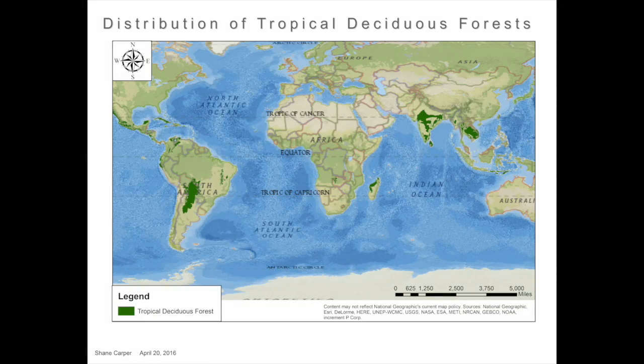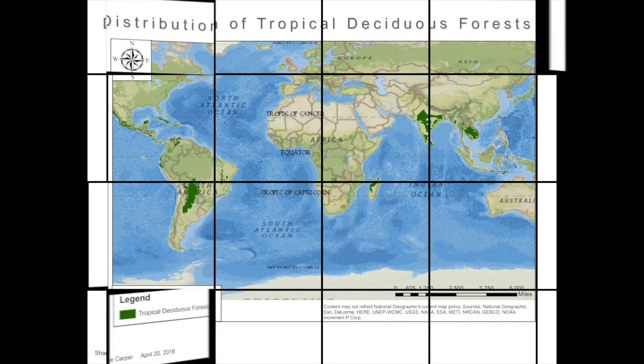Tropical deciduous forests, also known as monsoonal forests, are found in a belt along the equator between the tropics of Cancer and Capricorn, as well as the humid subtropics. They are also found in parts of Africa, India, South America, Central America, and small islands in the Pacific.